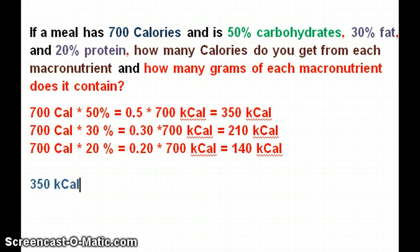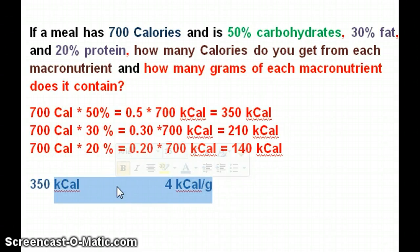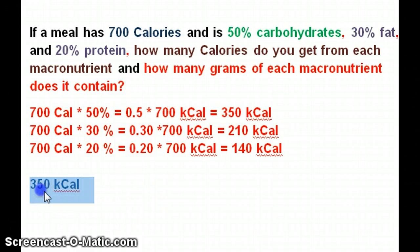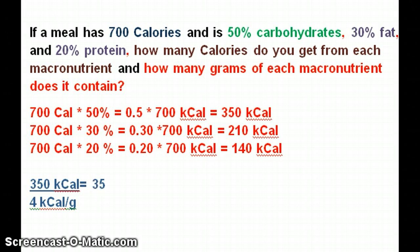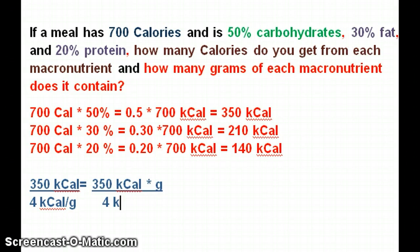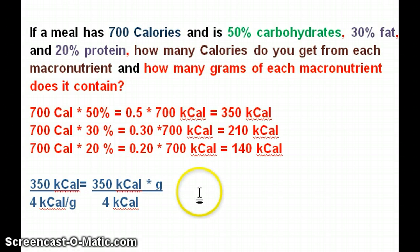So I know I have 350 kcal from carbohydrates. My energy density is 4 kcal per gram. I want to get rid of kcal, so I divide: 350 kcal times grams over 4 kcal. The kilocalories cancel out and I get 350 divided by 4, which equals 87.5 grams.